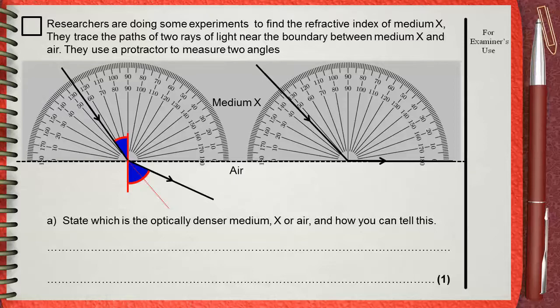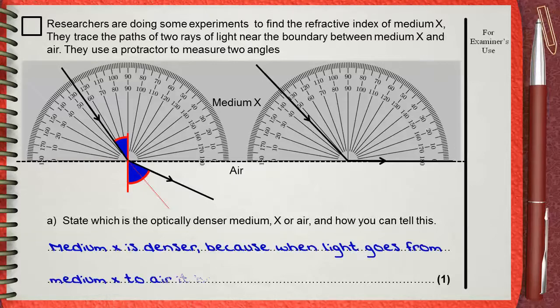This means that medium X is the denser and medium air is the rare. So the answer is medium X is denser because when light goes from medium X to air, it bends away from the normal. The question is for one mark. You must say medium X because.